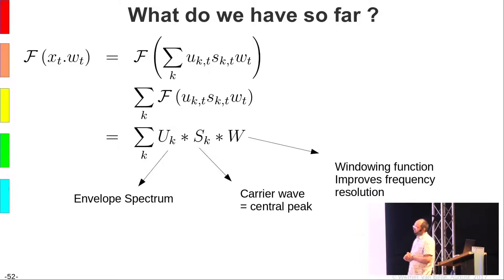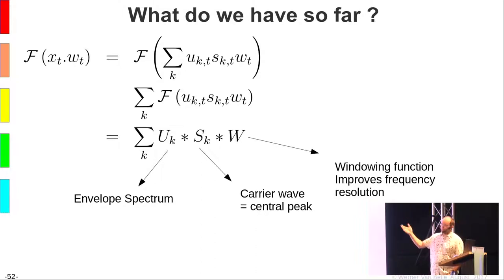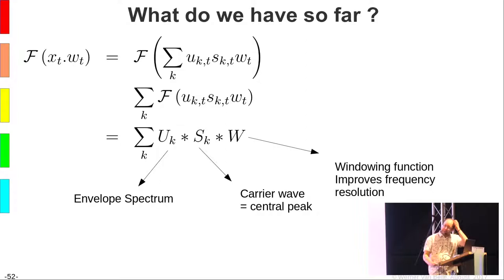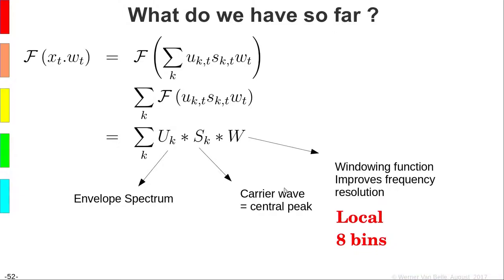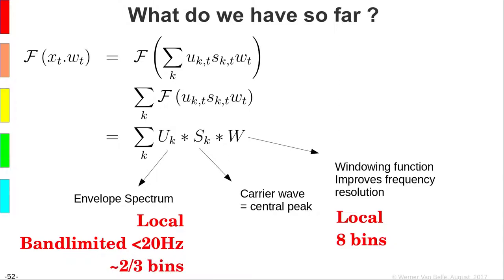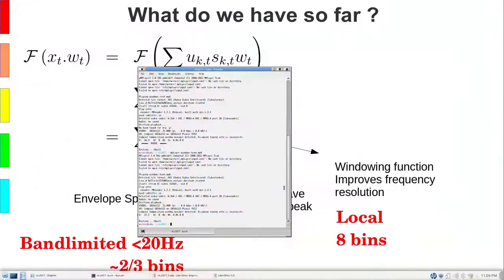Back to the model: since we use a spectrum, we take the Fourier transform of the sound. Linearity allows us to move the transform inside the summation, giving a sum of Fourier transforms of modulated signals — the same as convolving the spectra of individual signals. The carrier wave and windowing function together span at most eight bins, and the envelope spectrum is local and band-limited — smaller than 20 Hz, which is about two or three bins in a normal spectrum.